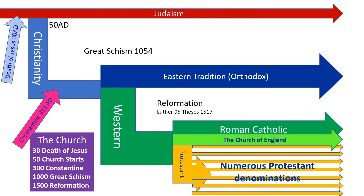Before we get into the details of the Reformation, it's worth doing some revision on the basic shape of church history — the big sweep stuff. We need to start with Judaism, and we're going to see a sort of steady fragmentation from Judaism. Jesus and the disciples were Jews, the Bible is entirely written within a Jewish context, Paul was Jewish, the gospel writers were Jewish, and the other letters were written by Jews — so it's totally Jewish.